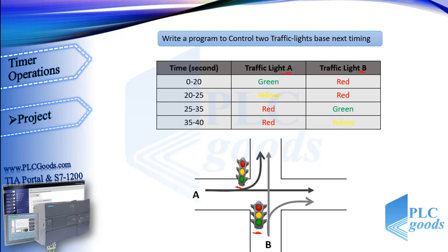Then after 5 seconds, during which the yellow light will be on for street A, cars at street A must be stopped behind the red light, and street B will be open for 10 seconds. After that, the yellow light will be on for 5 seconds. Then this cycle will continue until a stop push button is pressed.